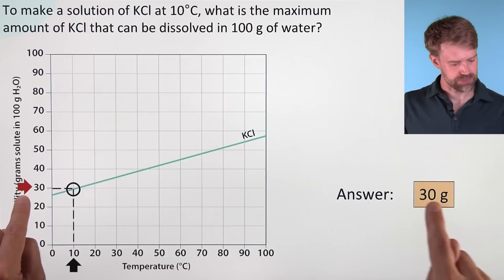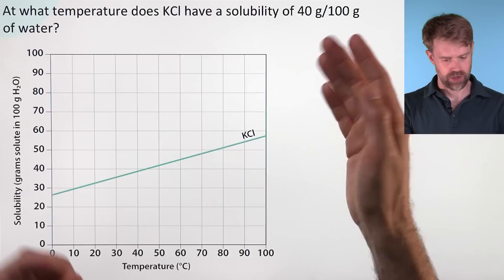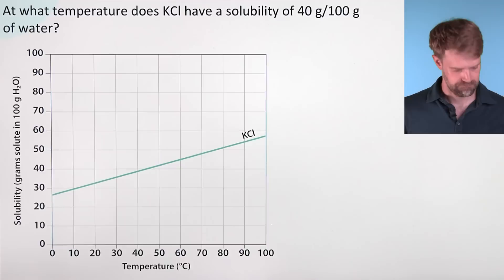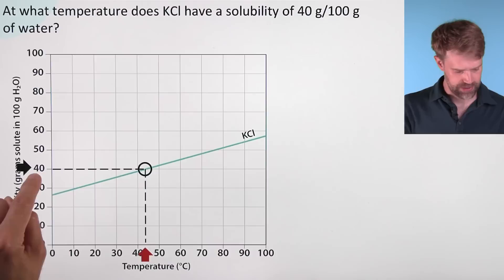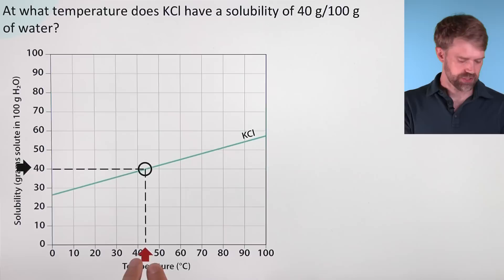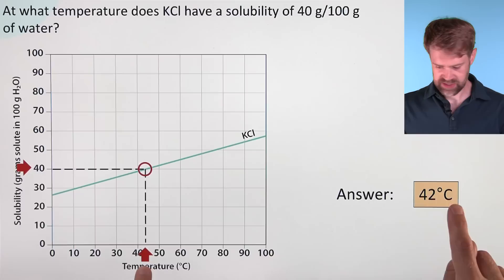At what temperature does KCl have a solubility of 40 grams per 100 grams of water? We start at 40 grams per 100 grams of water on the y-axis, go across to the solubility curve, and down to the x-axis. It's going to be 40-something — we've got to estimate. Let's say 42 degrees Celsius is the temperature where KCl has that solubility.